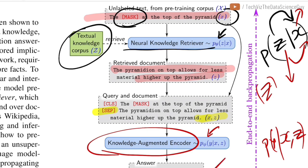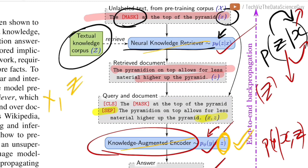This second model is called the knowledge augmented encoder, with learnable parameters phi. It takes in the original document x and the retrieved document z, and predicts the masked token y. The loss from this prediction is back-propagated to train both the encoder parameters phi and the retriever parameters theta. If the encoder is well-trained but the retriever returns a poor z, the encoder cannot make a good prediction; and if z is poor, even a good encoder fails. Both are jointly trained.